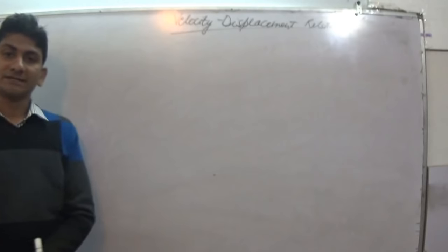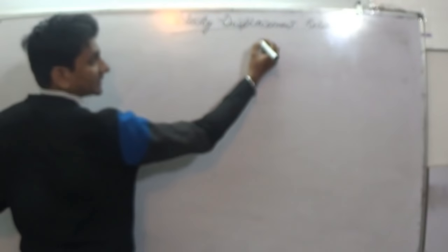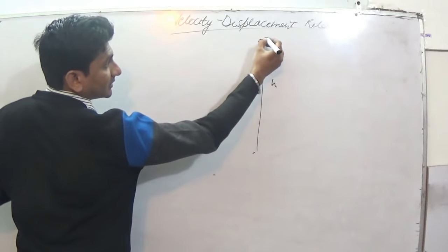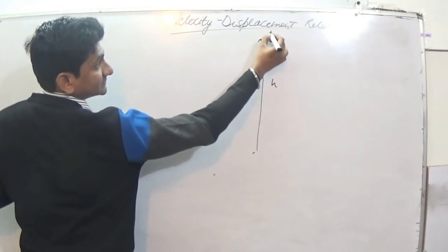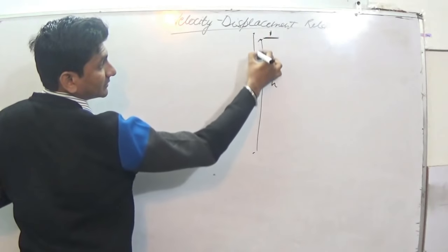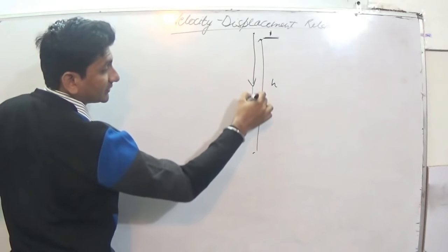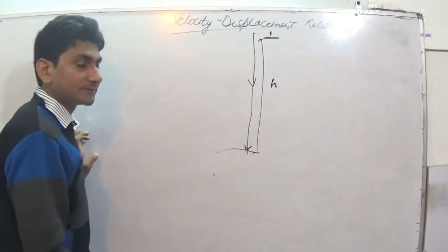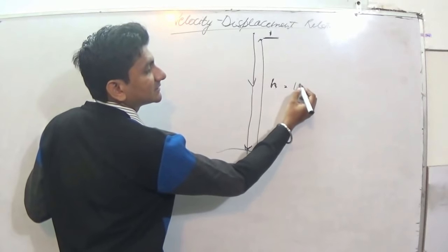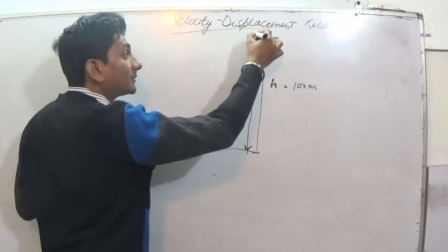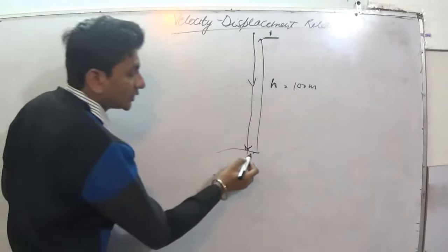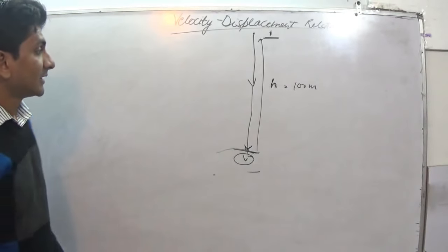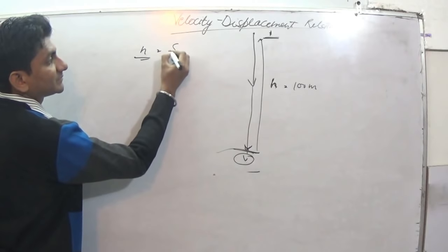Let us take one example. An object, here there is a building of height h. You are standing here, you drop an object from here. It falls here. h height is given, let us say it is 100 meter. You dropped an object here, you have to find out the final velocity here. How will you find out? h is nothing but displacement here.